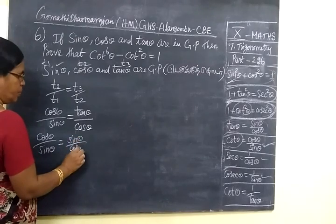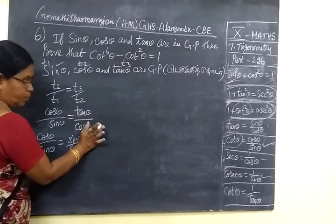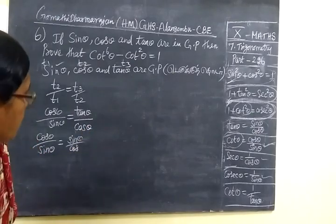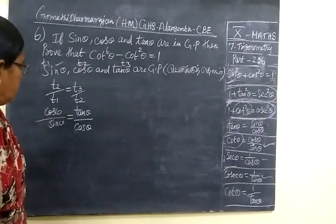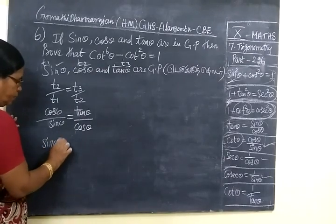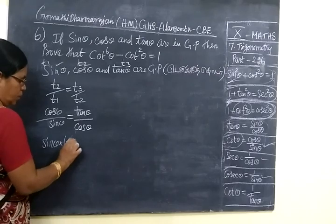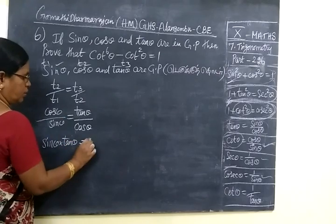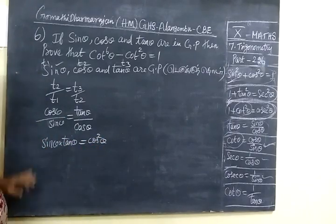This will make it cross multiply. So now cross multiply. Sin theta by tan theta equal to cos theta cos theta. Cos square theta.